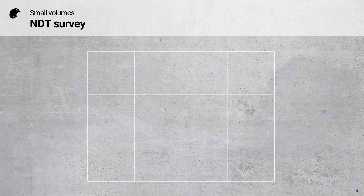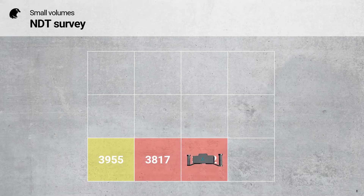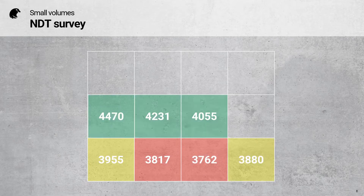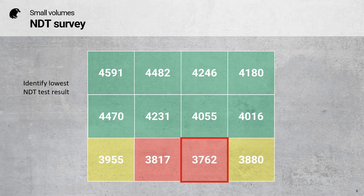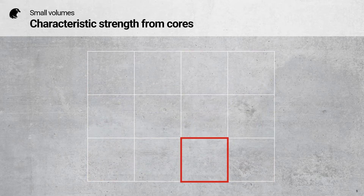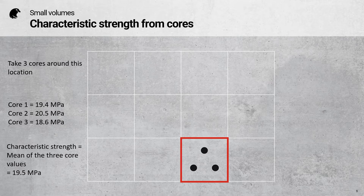Let's go through an example. First, we do an NDT survey — it can be rebound hammer or pulse velocity. In this case, I'm using a Pundit PD8050 to measure the pulse velocities. Once the grid is complete, I identify the lowest NDT test result. We then take three cores around this location. We calculate the mean of the three core values, and this is the characteristic strength for this test region.